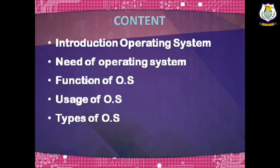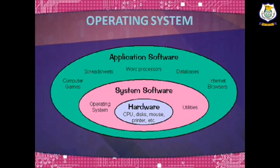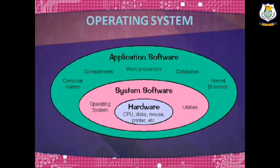Let's first see this image. As you can see, at the center is the hardware part of the computer. Over that we have the system software, and at the topmost is the application software. The computer is organized in the form of layers. The innermost layer is the hardware. The hardware devices cannot function without instructions, and those instructions are given using the application software. The system software is needed in between so that it can act as an interface between the hardware device and the application software.